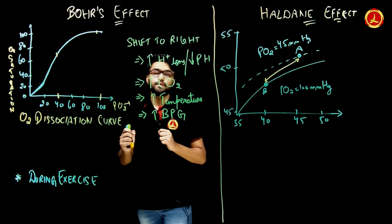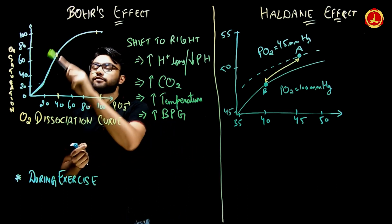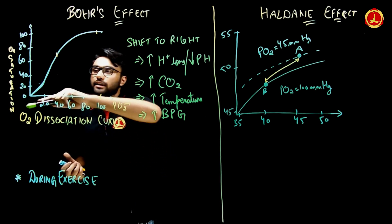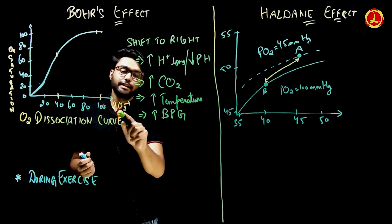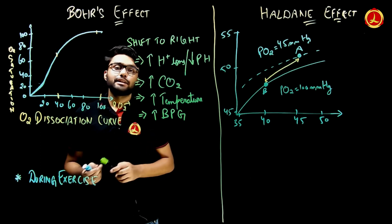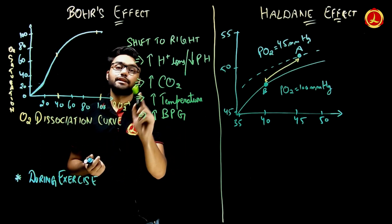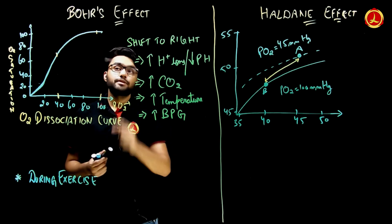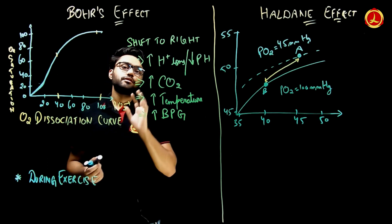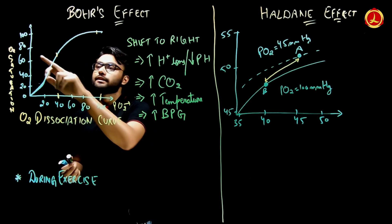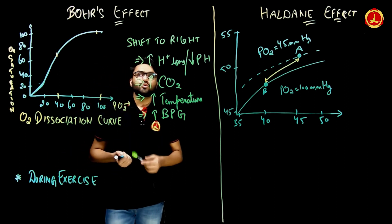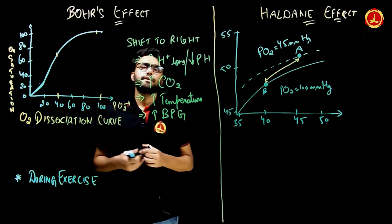First, we will talk about the Bohr effect. I have drawn the normal oxygen dissociation curve, with oxygen saturation in the blood on one axis and partial pressure of oxygen on the other. At 100 mmHg, which is the partial pressure in arteries, there is 97% saturation. At 40 mmHg, which is venous blood, there is 67% saturation.